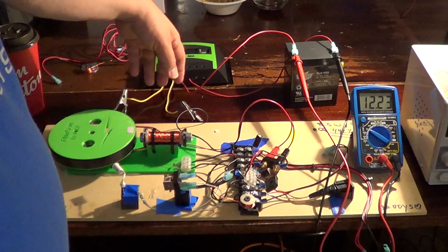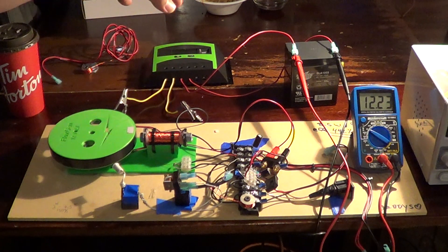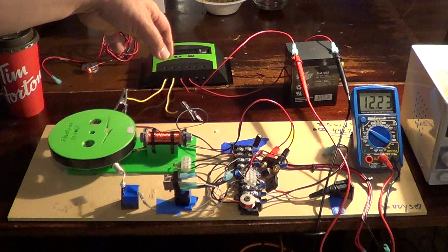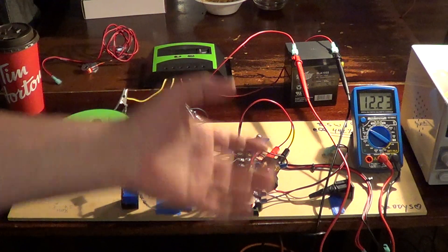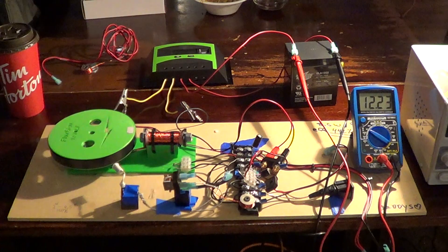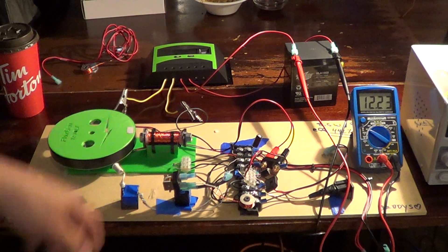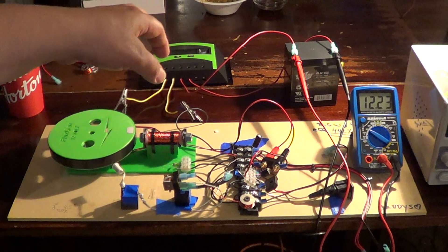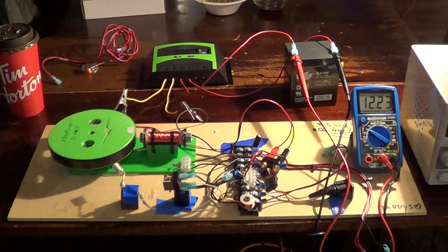Then the solar charger is going to read that electrical current going through there. It's going to decide how it's going to charge your battery, then it's going to start pumping the power into the battery you're going to charge.